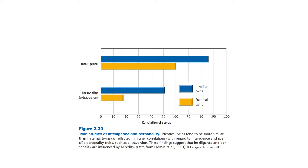With fraternal twins you have less similarity, because they have fewer genes in common. One kid can have some genes from the mother and some from the father, and the other kid can have different genes from each. But they still share some genes, so there will still be a very strong correlation. Personality — extraversion specifically — is also fairly high in correlation, but intelligence has a very, very high correlation. Personality is about 50% genetic and 50% non-shared environment.